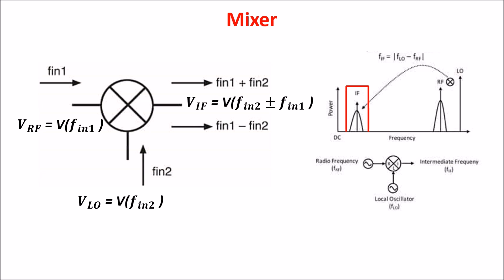Indeed, the most popular active double-balanced mixer topology in RF-IC design is the Gilbert cell mixer. This type of mixer exploits symmetry to remove the unwanted RF and LO output signals from the IF signal by cancellation.